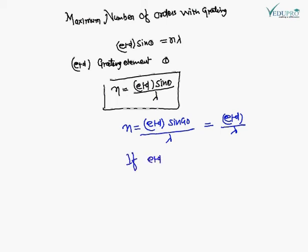If e+d < 2λ, then n_max < 2λ/λ = 2. This means n_max is less than 2, so only the first order will be visible in the spectrum.